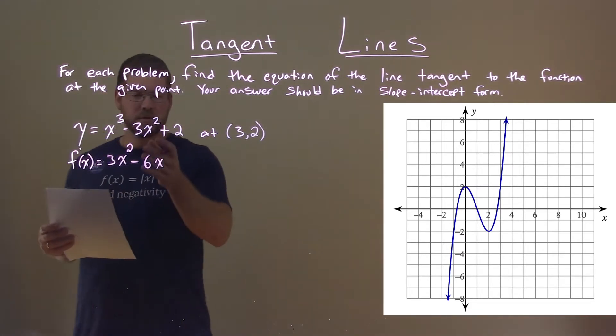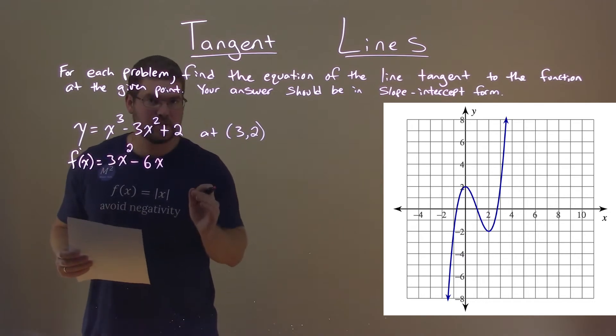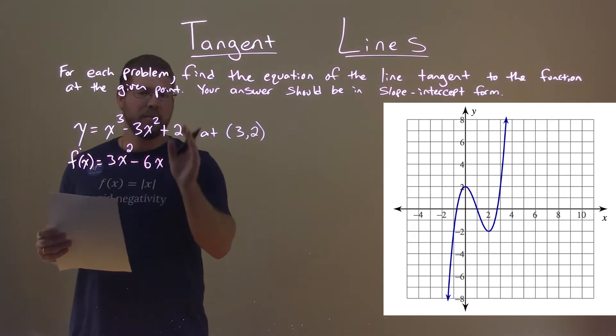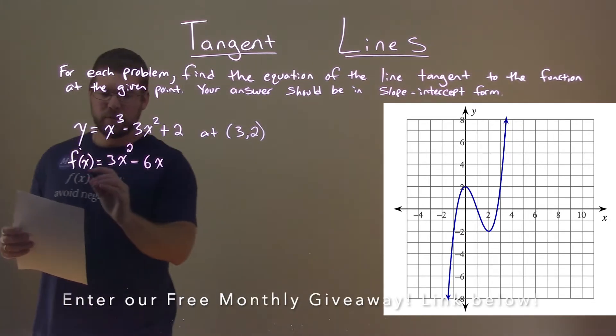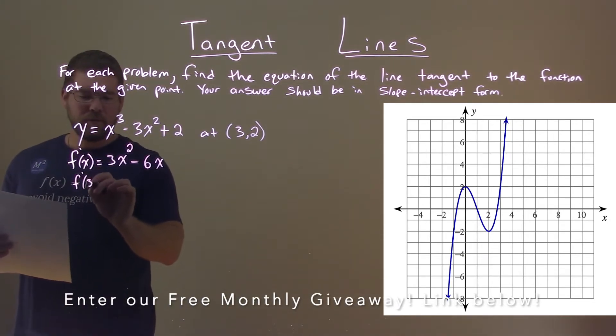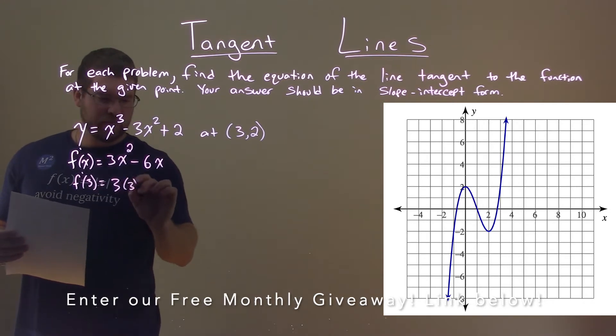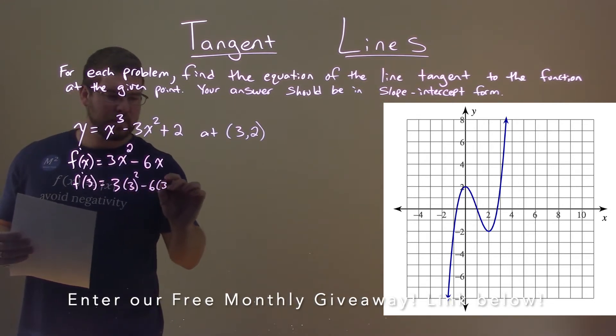Now that we have our derivative, we want to find the slope of the tangent line at 3 comma 2. Our x value is 3, so we evaluate f prime of 3, putting 3 in for x: 3 squared minus 6 times 3.